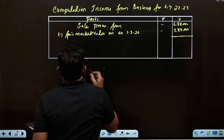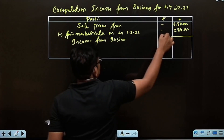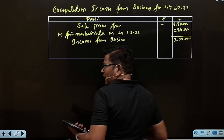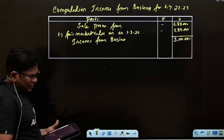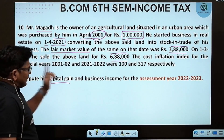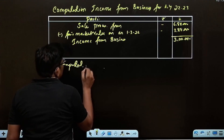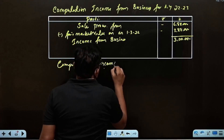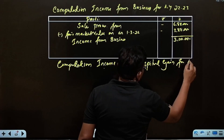Income from business: the fair market value on the date of conversion is 3,88,000 rupees, which gives income of 3,00,000 rupees from business. Computation of income from capital gains for the assessment year 2022-23.